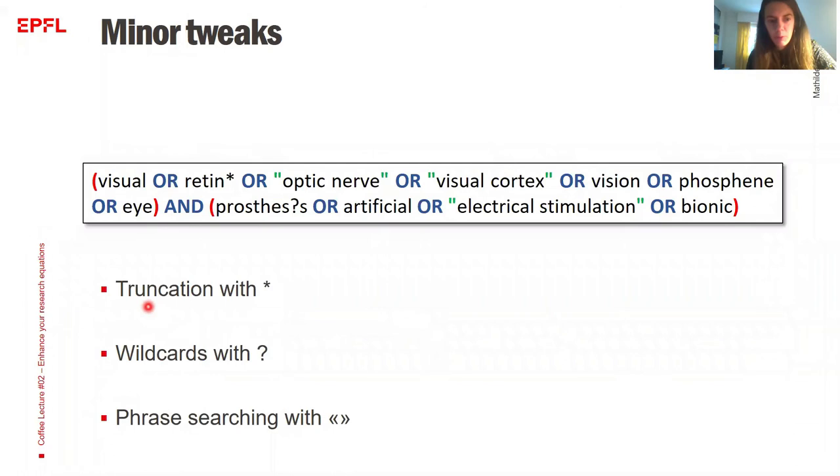So here, the minor tweaks are the following. The first one is the truncation with an asterisk. And it will help me have a search for the stem of the word and all of its endings. An example I have is with interact. So if I have interact asterisk, the system will search for interact, interaction, interactivity. And it will give me more possibilities, let's say, and I don't have to write them all.